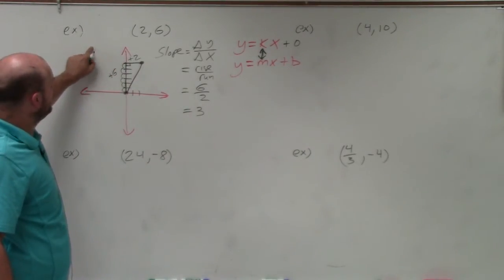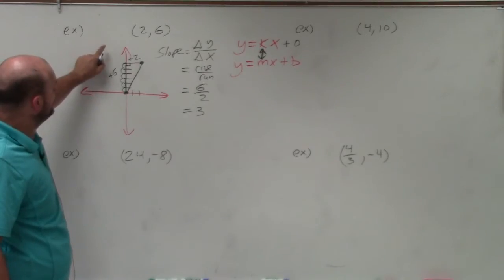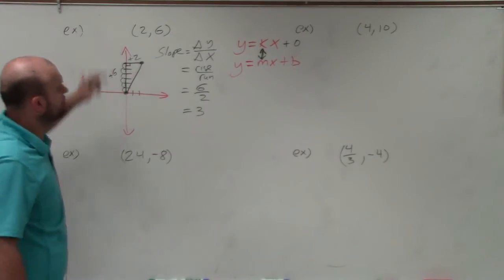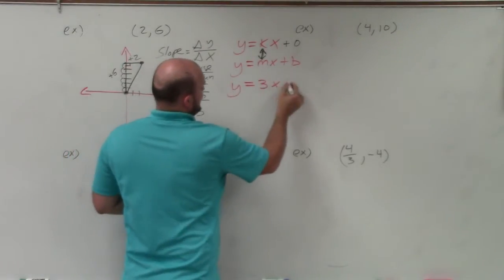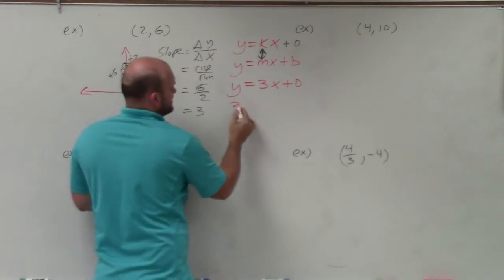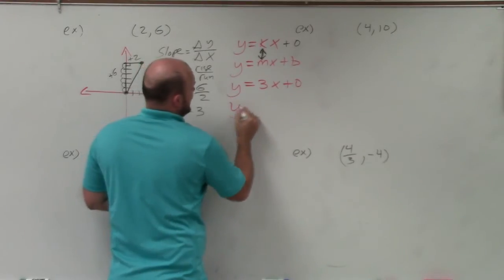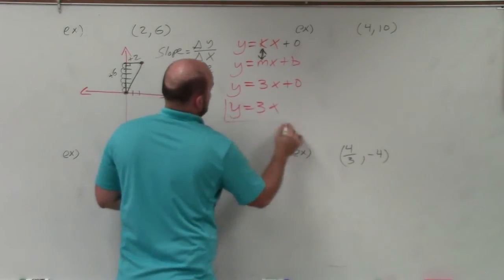So to write my equation in direct variation form, I would just write it y equals, with my slope, 3x plus 0. Well, again, we don't need to write the 0. So it's just y equals 3x.